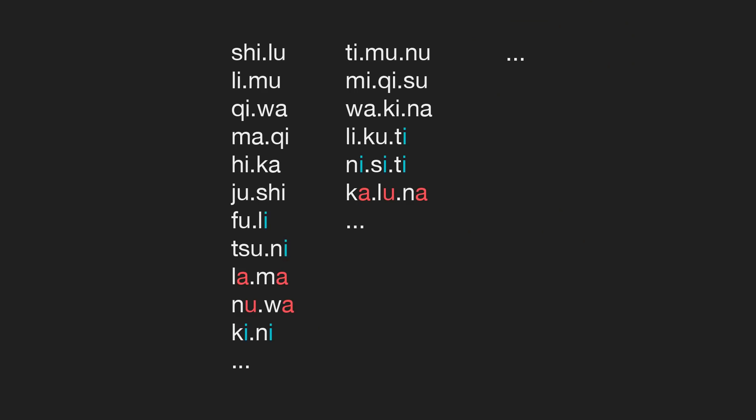Let's say we're going for back harmony, so we need to do lots of fronting and lots of backing. Let's do some fronting — umlaut: every time an e shows up, the vowel in the previous syllable becomes a front vowel. So now we have some more words that are all in harmony. Let's also say that in the vicinity of palatal consonants, vowels front. So we have even more words that are in harmony.